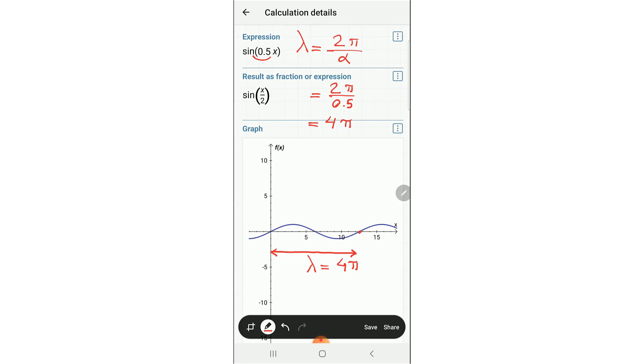If the coefficient is greater than 1, like 2 or 3, the wavelength decreases.